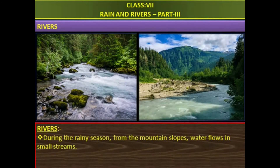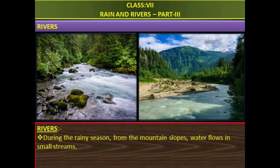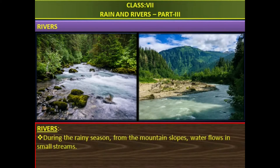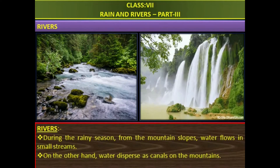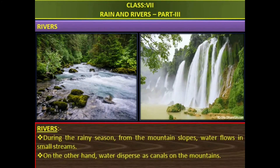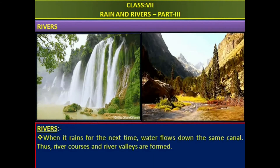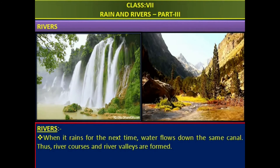During the rainy season, water flows in small streams from the mountain slopes. On the other hand, water disperses as canals on the mountains. When it rains again, water flows down the same canal. Thus, river courses and river valleys are formed.